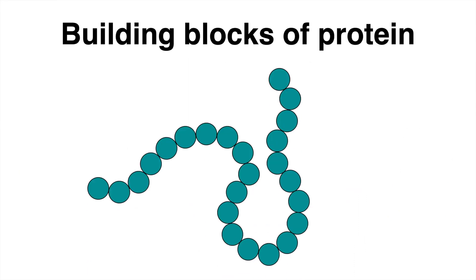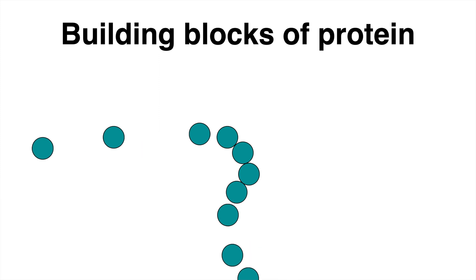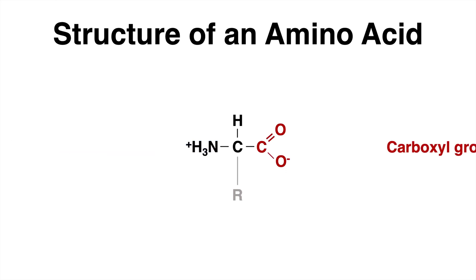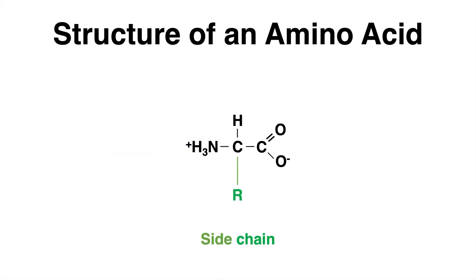Proteins execute all different functions in the body. Each protein is made up of smaller units. When we look at one single monomer, we can identify the structure of an amino acid. Each amino acid has one amino group, a carboxyl group, and a side chain that determines the characteristic of the amino acid.